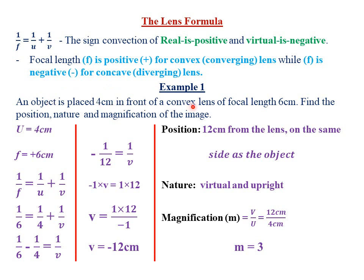Let's look at our first example. An object is placed 4 centimeters in front of a convex lens, so the object distance u equals 4 centimeters. The focal length is 6 centimeters, therefore f equals positive 6 centimeters, because we are using a convex or converging lens which always has a positive focal length. If we were using a concave or diverging lens, f would be negative 6 centimeters. We need to find the position, nature, and magnification of the image.